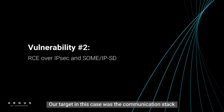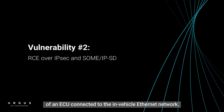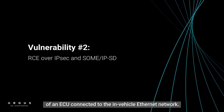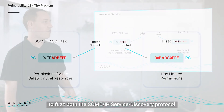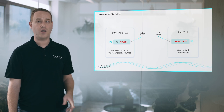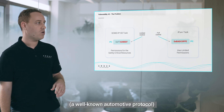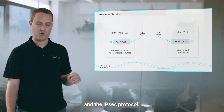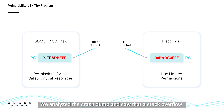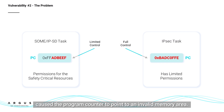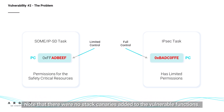Vulnerability number two. Our target in this case was the communication stacks of an ECU connected to the in-vehicle ethernet network. We used our interface fuzzing tool to fuzz both the SOME/IP service discovery protocol — a well-known automotive protocol — and the IPsec protocol. In both cases, our fuzzer successfully crashed the system. We analyzed the crash dump and saw that the stack overflow caused the program counter to point to an invalid memory area. Note that there were no stack canaries added to the vulnerable functions.